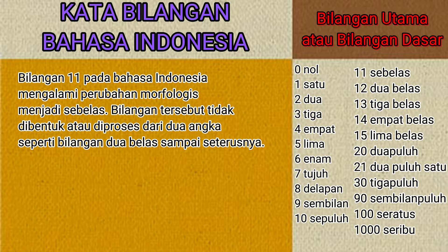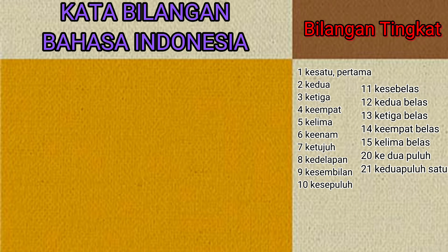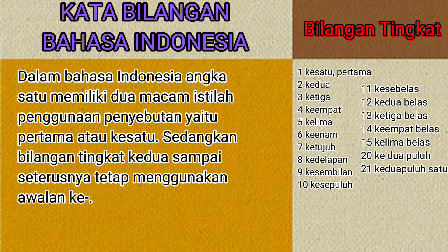Di sebelah kanan ada tabel yang berisi angka atau bilangan tingkat sebagai berikut: kesatu, kedua, ketiga, keempat, kelima, keenam, ketujuh, kedelapan, kesembilan, kesepuluh, kesebelas, kedua belas, ketiga belas, keempat belas, kelima belas, ke dua puluh, ke dua puluh satu. Dalam bahasa Indonesia, angka satu memiliki dua macam istilah, yaitu 'pertama' atau 'kesatu', sedangkan untuk bilangan tingkat kedua dan seterusnya tetap menggunakan awalan ke-.